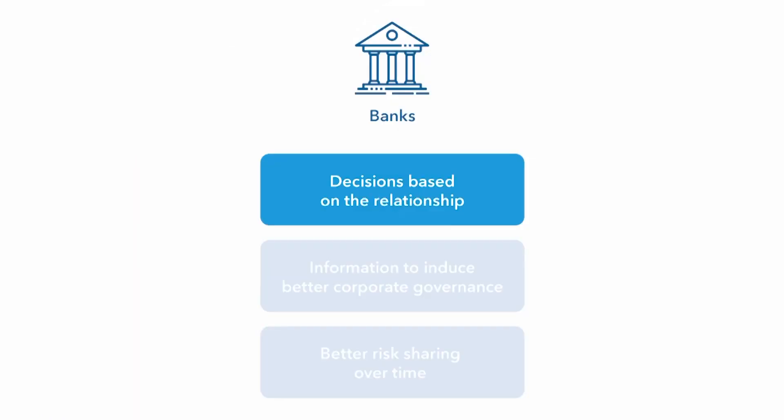First, banks can make lending decisions based on relationships, which helps increase credit availability to firms and individuals and potentially lower collateral requirements when information is limited. Banks tend to know their customers and community.